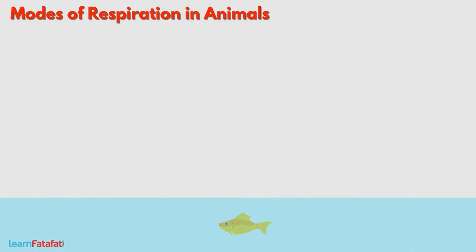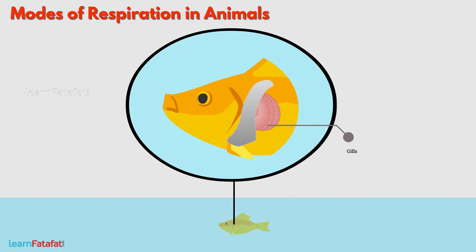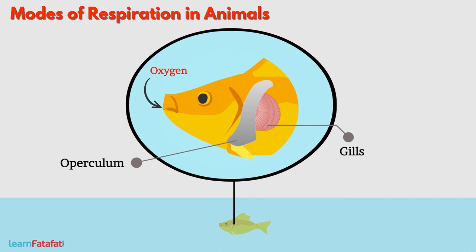Aquatic animals like fish breathe by gills. These are membranous filaments which are covered and protected by the operculum, a flap-like structure. Gills extract oxygen present in water and release carbon dioxide outside the body.